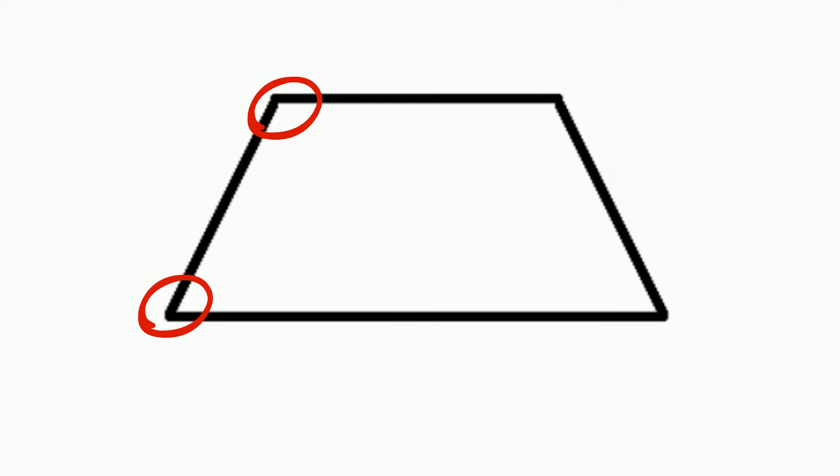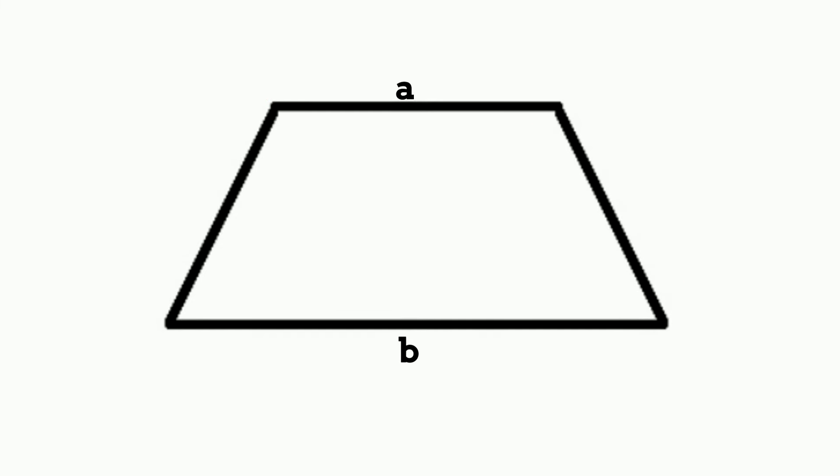A trapezoid is a closed figure, therefore it has four corners which are called vertices. The median is a segment that connects the midpoint of two legs. The median is parallel to the bases and equals half the length of the two bases. You can find the length of the median by adding the length of the two bases and dividing by two.